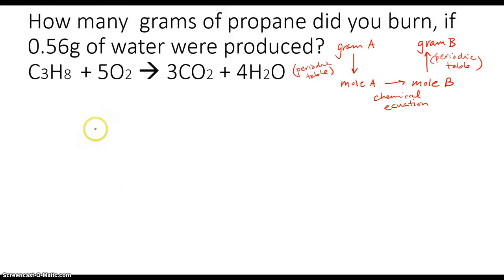This lesson is going to be working with stoichiometry problems where you're going from grams of one known substance to grams of an unknown substance that has been either produced or is required in a chemical equation or chemical reaction. In this case, we have grams of propane that we've burned.